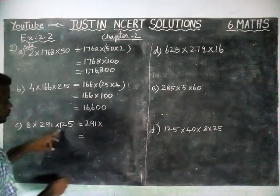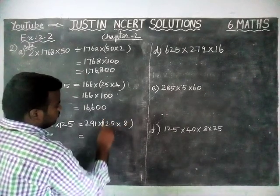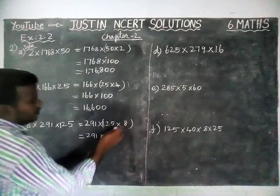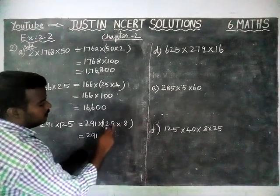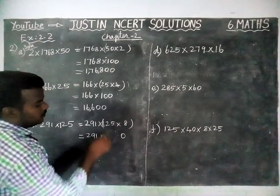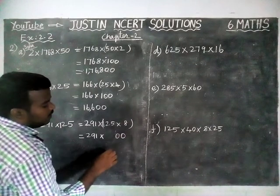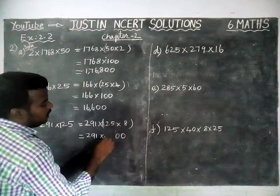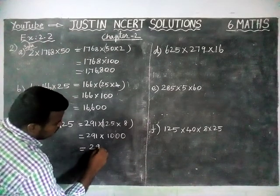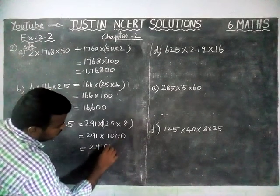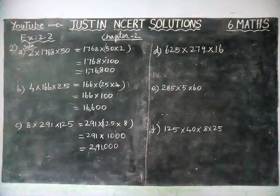Option C: 291 × 125 × 8. If we multiply 125 × 8, we get 1,000. Let's verify: 8 × 5 = 40, carry 4; 8 × 2 = 16, plus 4 = 20, carry 2; 8 × 1 = 8, plus 2 = 10. So 125 × 8 = 1,000. Now 291 × 1,000 means we add three zeros, so the answer is 2,91,000.